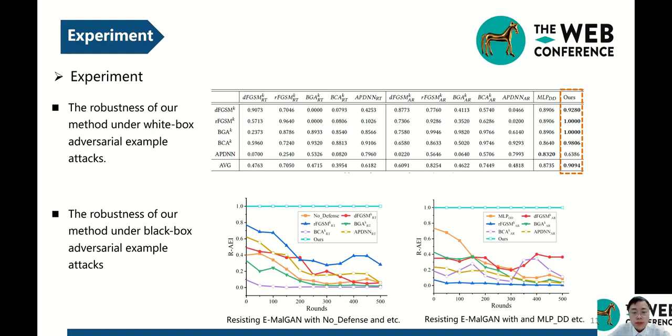Then, we show the robustness of our method on the black-box adversarial example attacks called MalGAN. We use the ratio of adversarial examples being identified to show the performance of methods. As shown in the figures, all the competitors of our model are defeated by MalGAN. However, our model captures almost all the adversarial examples generated by MalGAN.